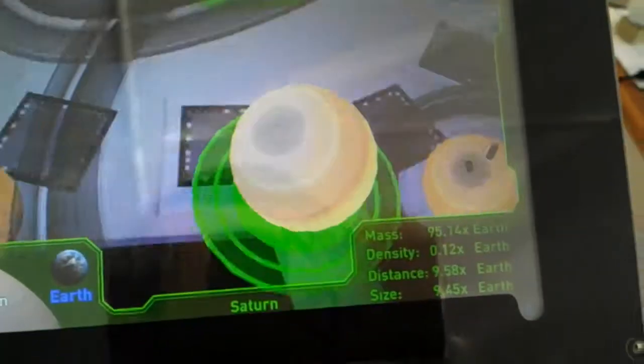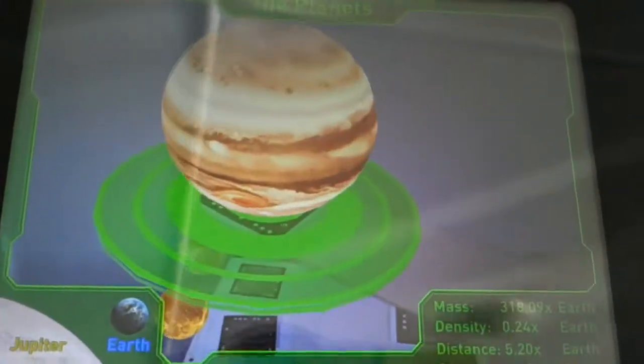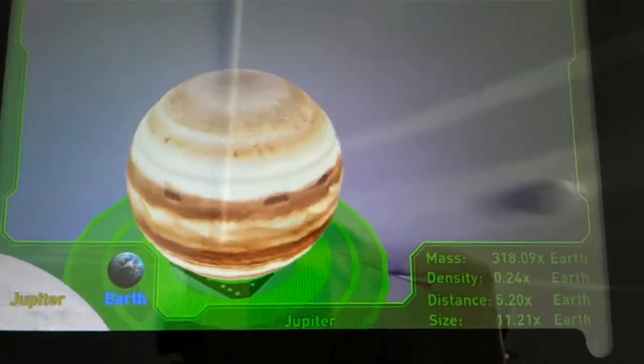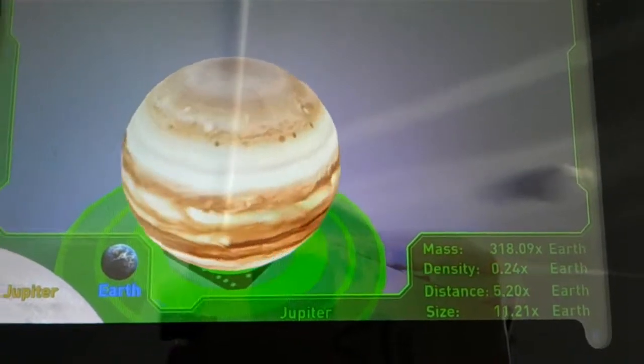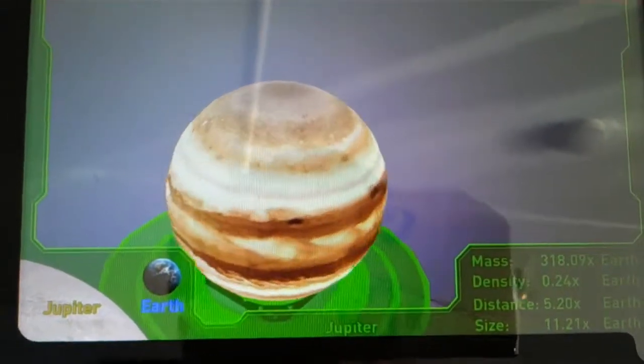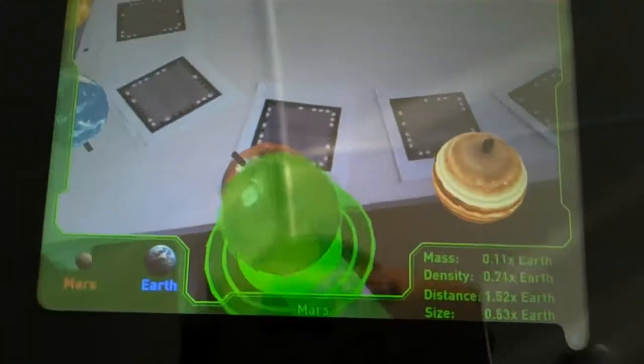Then we can go and pick up something else. They are obviously spinning at their relative speeds and you can see that their mass, density, and distance is in the bottom corner relative to Earth and in the other corner is their size relative to Earth. You can go around exploring each of the different planets.